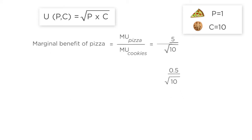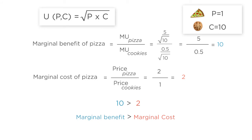The marginal benefit of pizza is the ratio of these marginal utilities, 5 over .5 or 10. This is greater than pizza's marginal cost of 2, so we should give up cookies for more pizza.